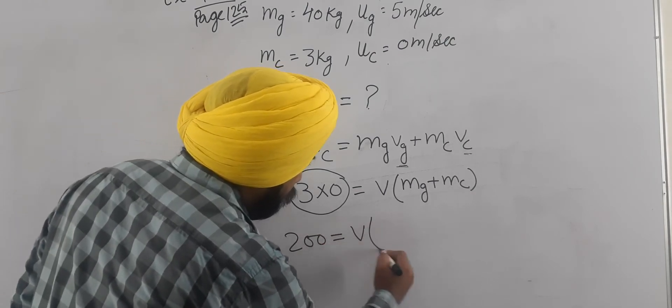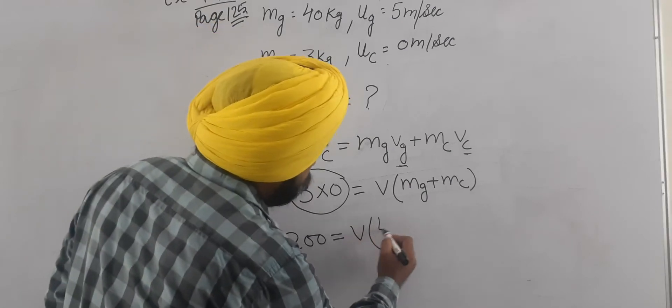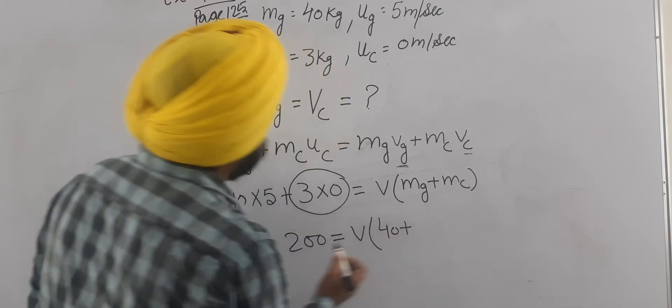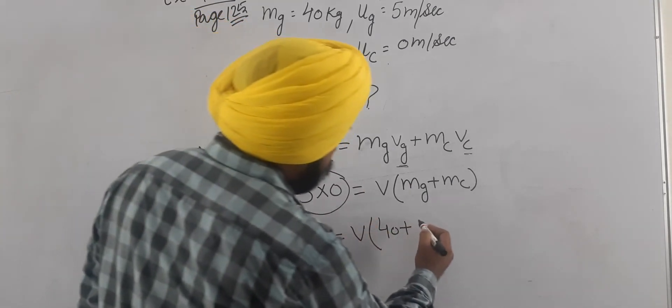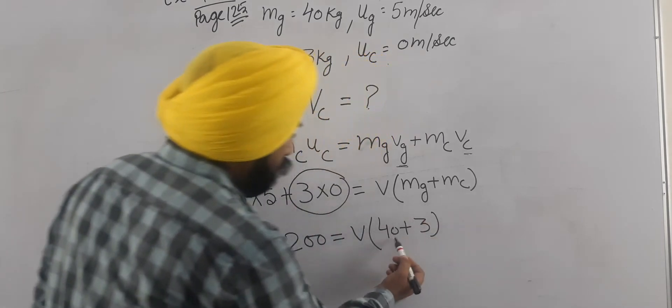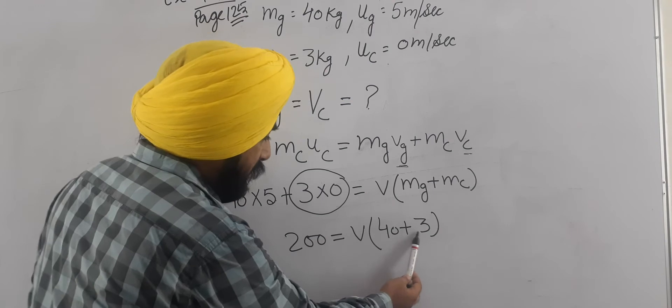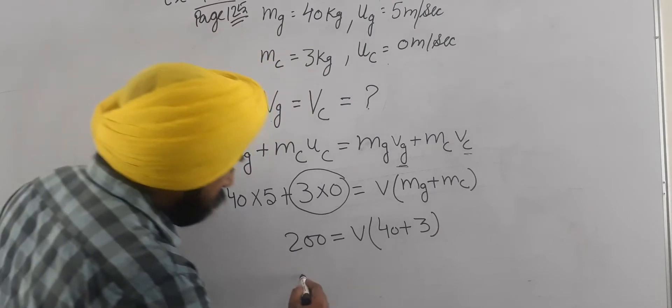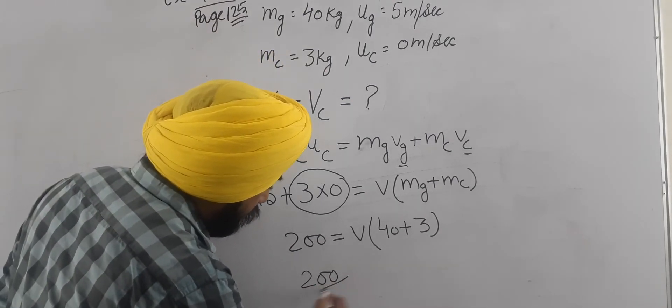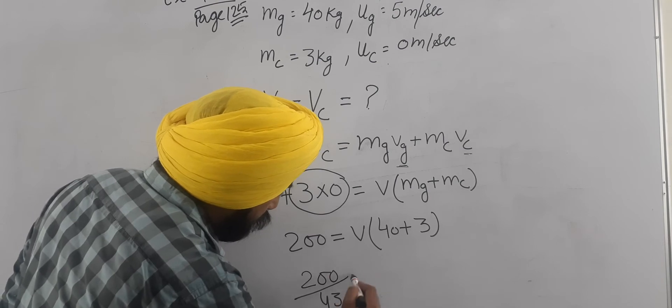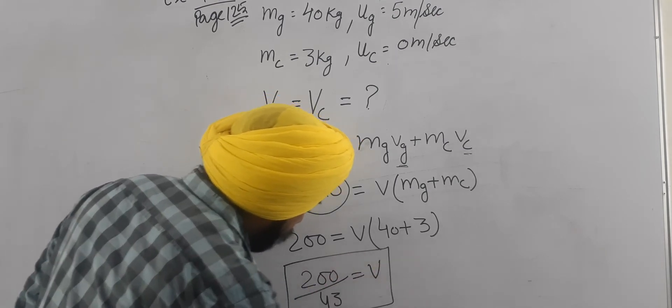Is equal to V. Mg is 40, mc is 3, so 40 plus 3 is 43. In this side it is in multiply. When we take it to left hand side, it will come in divide. 200 upon 43 is equal to velocity in meter per second. This is the answer.